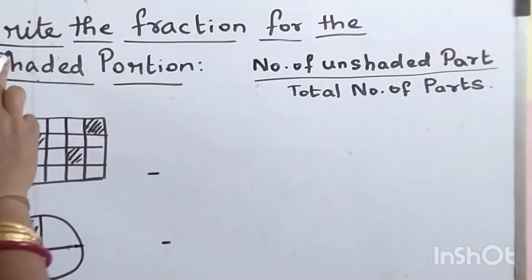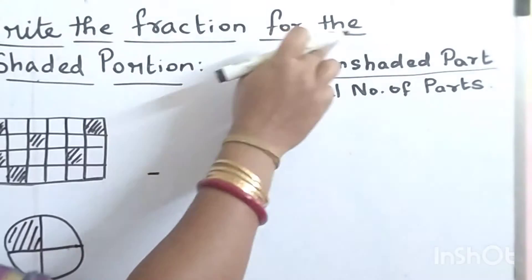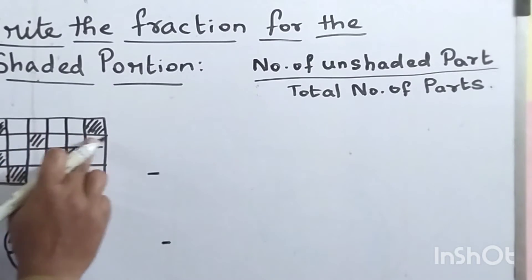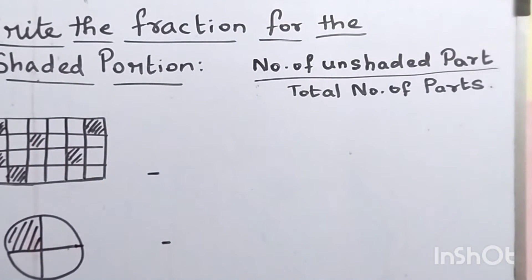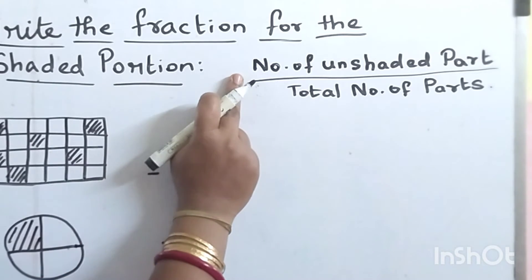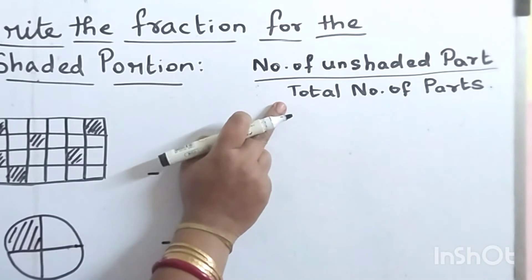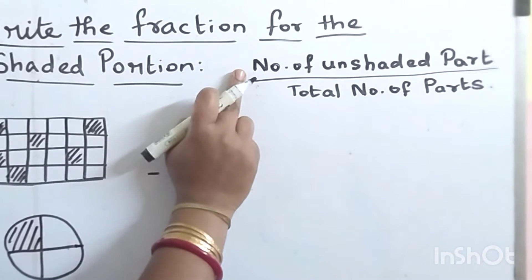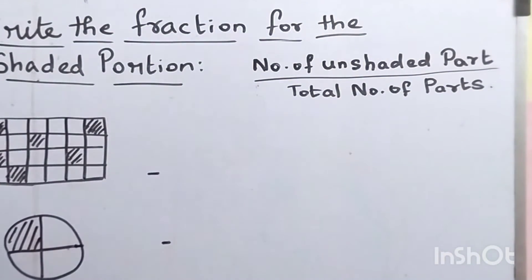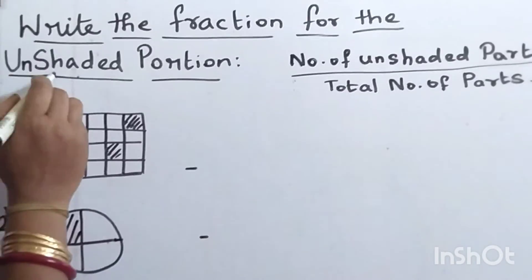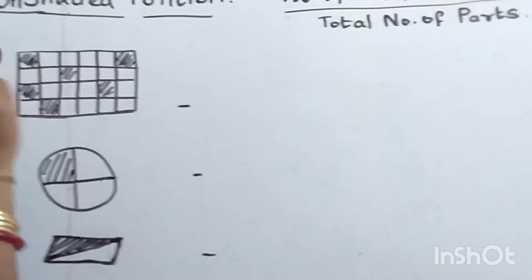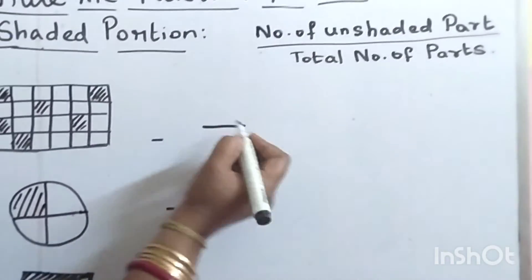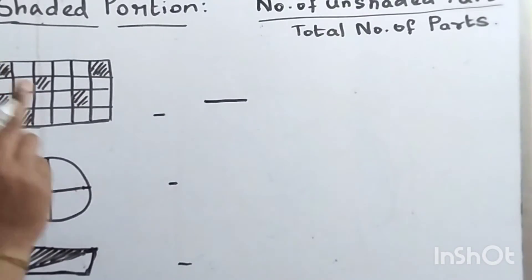Children, now we are going to write the fraction for the unshaded portion. First, let's count the total number of parts.